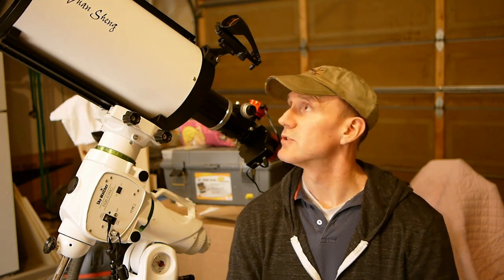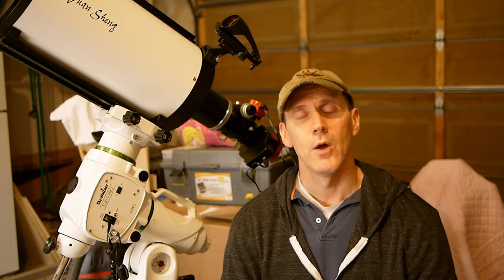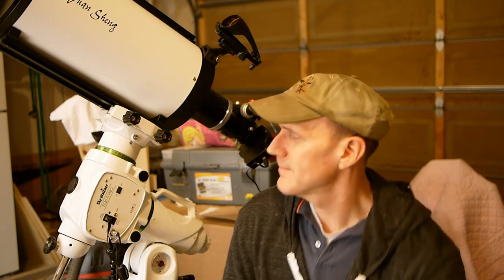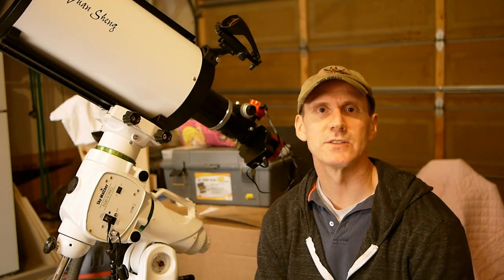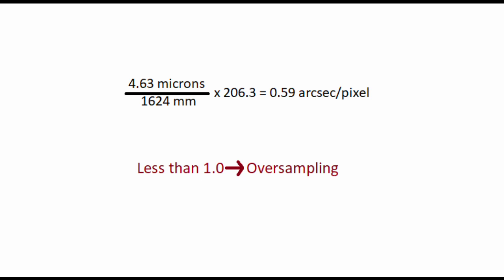For example, this telescope here is an RC-8 — a Ritchey-Chrétien 8-inch telescope with a focal length of 1624 millimeters. And my camera back here has a pixel size of 4.63 microns. So simply, I take 4.63, divide by 1624 millimeters, then multiply that by 206.3, and the number I come up with is 0.59, which is less than one, and that means I am oversampling.